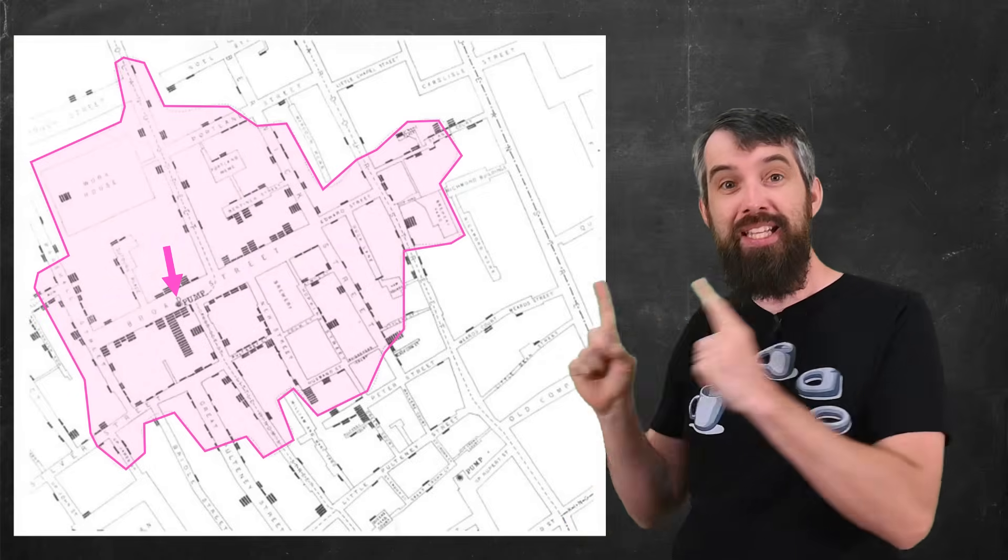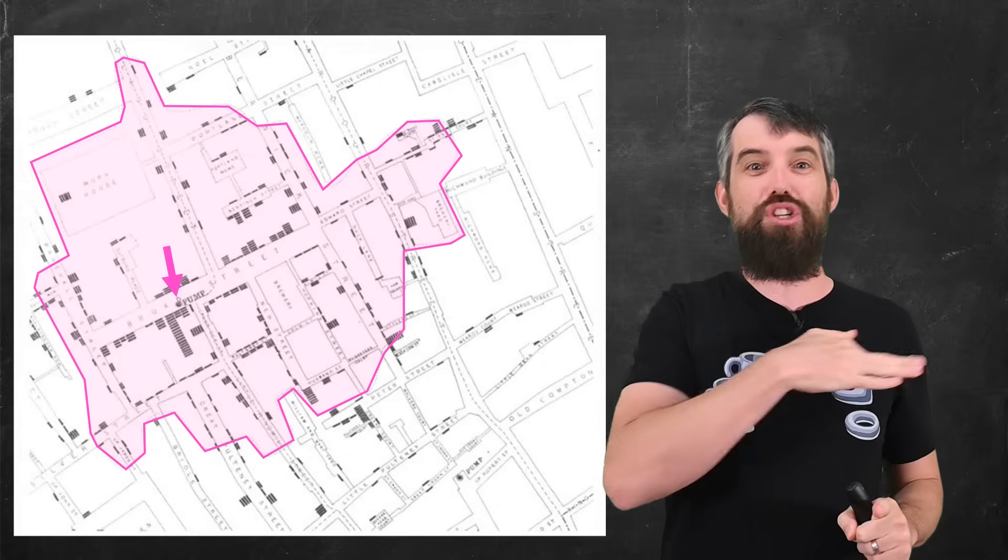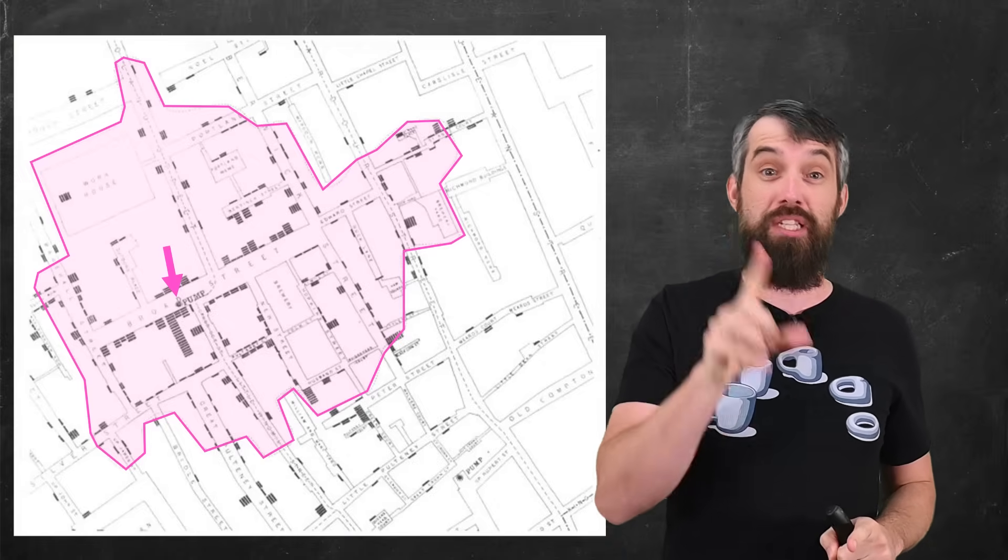But when you try to map out which water pump is closest, well, he came up with a map that looks something like this. This region was the portion of London that was all closest to this one pump.